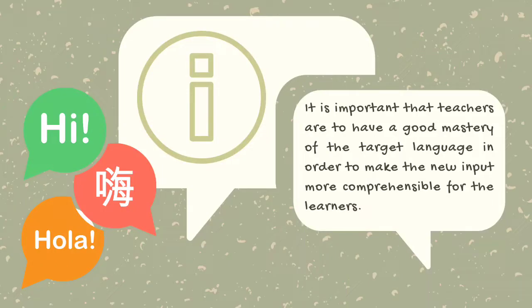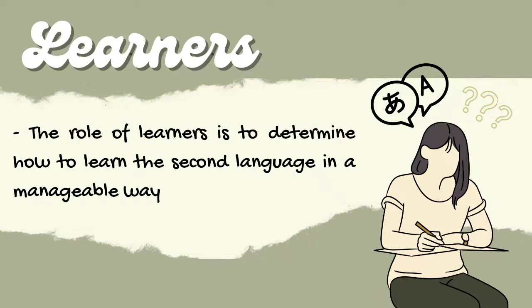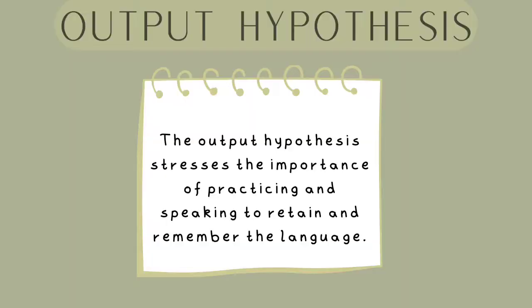Since learners have different abilities and learning bases, it is important that teachers have a good mastery of the target language in order to make new input more comprehensible for the learners. Learners should be supplied with input through the forms of reading, encouraging listening in conversations, and having lessons on grammar and vocabulary. The role of learners is to determine how to learn the second language in a manageable way. The output hypothesis stresses the importance of practicing and speaking to retain and remember the language.